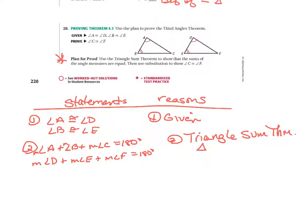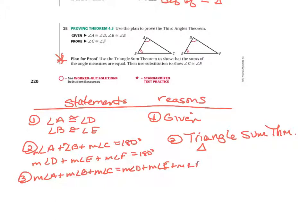If you want to abbreviate triangle with a triangle symbol, you can. The next step uses either transitive or substitution. I'm going to show that the measure of angle A plus the measure of angle B plus the measure of angle C equals the measure of angle D plus the measure of angle E plus the measure of angle F. This I'm going to say is substitution.